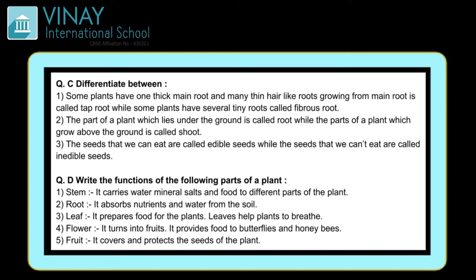Now let's move to Question D: write the functions of the following parts of a plant. First, stem — it carries water, minerals, salts and food to different parts of a plant. Root — it absorbs nutrients and water from the soil. Leaf — it prepares food for the plants and leaves help plants to breathe.